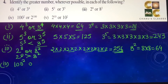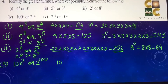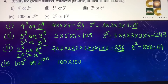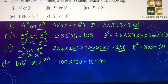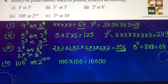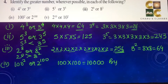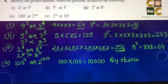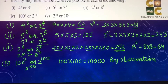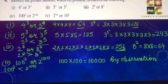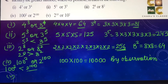Fourth part: 100 to the power 2 or 2 to the power 100. 100 to the power 2 is basically 100 into 100, that gets 10,000. And 2 to the power 100 — you need not find out, it's too huge. So by observation, 100 to the power 2 is less than 2 to the power 100. The bigger number is 2 to the power 100.